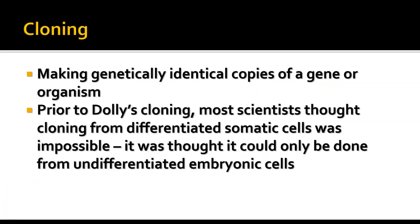In cloning, we're making genetically identical copies of either a gene or an organism. We talked specifically about the cloning of Dolly the sheep, cloned in the late 1990s in Scotland. Prior to Dolly, many scientists thought it would be very difficult or impossible to clone a new organism from a differentiated somatic cell — a body cell. Up until that point, success had really come from undifferentiated embryonic cells. But the scientists who worked with Dolly learned techniques to cause those fully differentiated somatic cells to become less differentiated so they would work to clone a new organism.